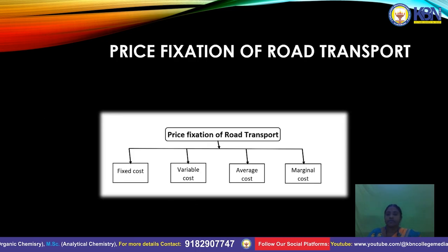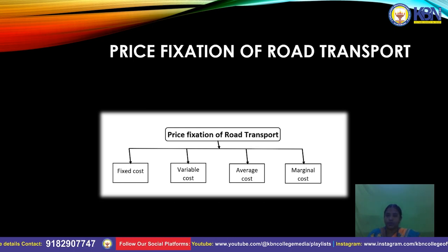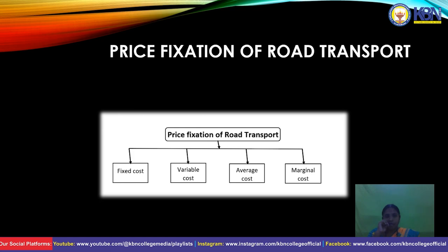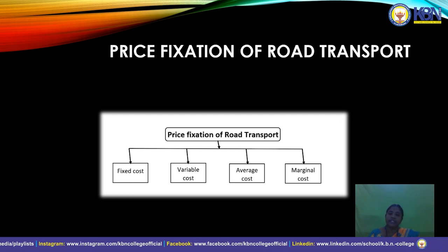Price fixation of road transportation has four types. First, fixed cost. Second, variable cost. Third, average cost. Fourth, marginal cost. These are the price fixation types in road transportation.